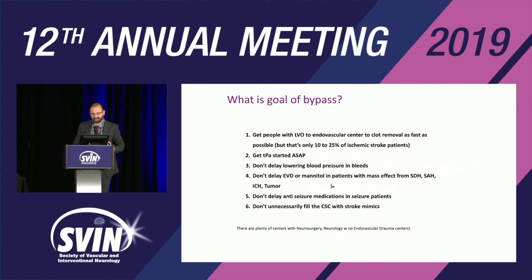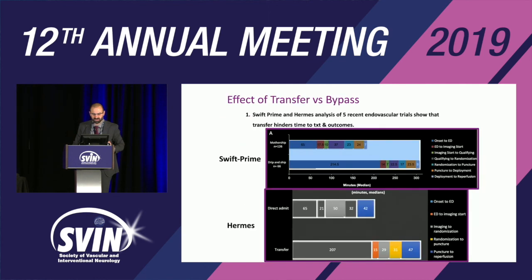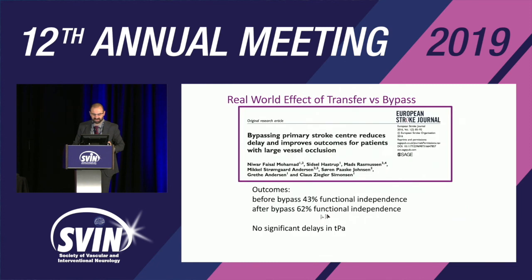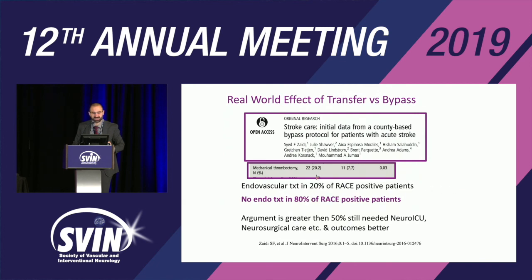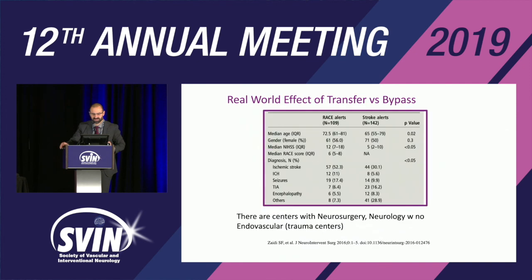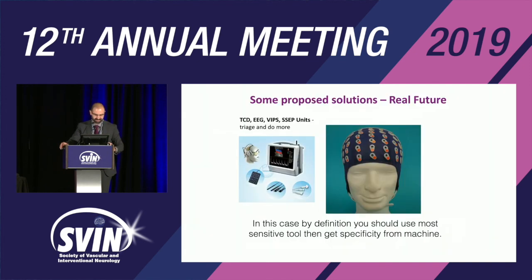What is the goal of bypass? It depends on how many comprehensive stroke centers you have and your resources. Going directly to a comprehensive center does produce better outcomes — data from Denmark confirms this — but 80% of patients were excluded in that study, and only 20% of RACE-positive patients actually received endovascular treatment. Even with the most specific tools, 80% of bypassed patients end up not receiving intervention. There may be no perfect solution — we probably need technology like mobile stroke units to truly solve this.